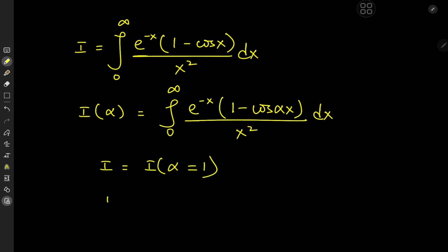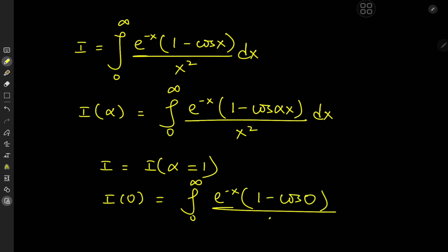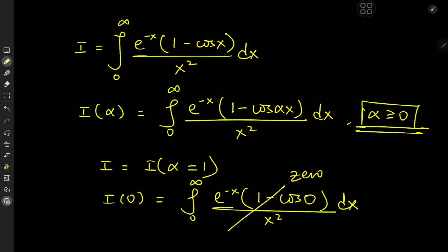We also know that if we plug in alpha equal to 0, we get the integral from 0 to infinity of e to the negative x times 1 minus cosine zero divided by x squared dx. And cosine zero is 1, so the entire thing collapses to 0 for alpha equal to 0. Bear in mind that we're defining alpha here to be non-negative.